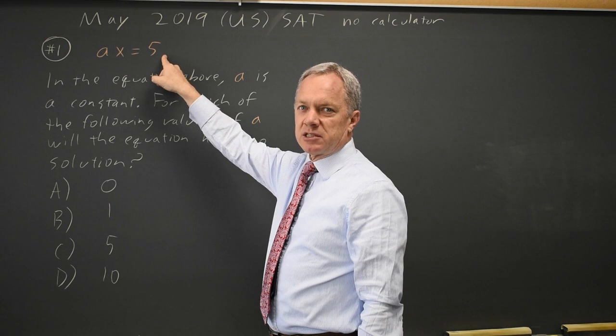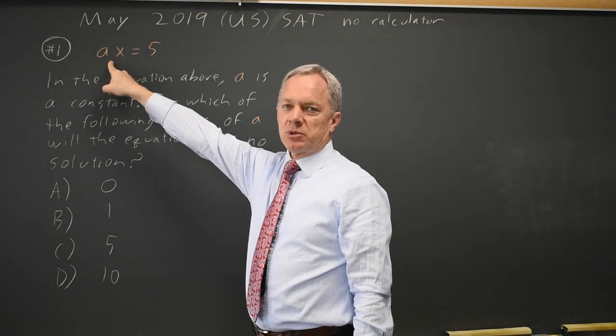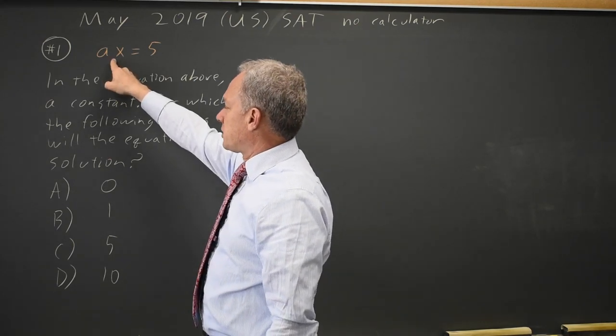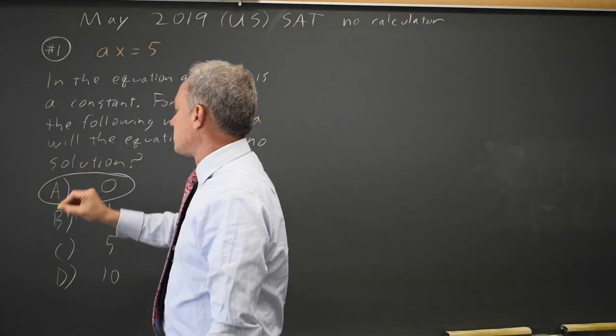Since the expression on the right is constant, to have the same slope the expression on the left has to be constant, and a times x is only constant when a is zero, so that would be our answer.